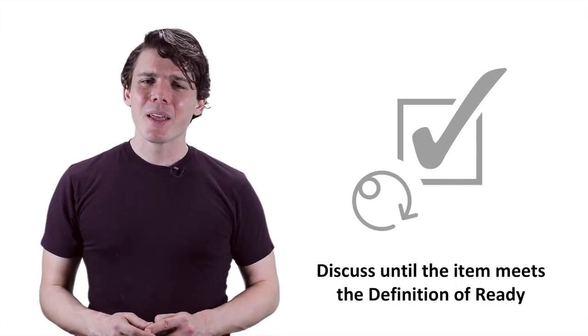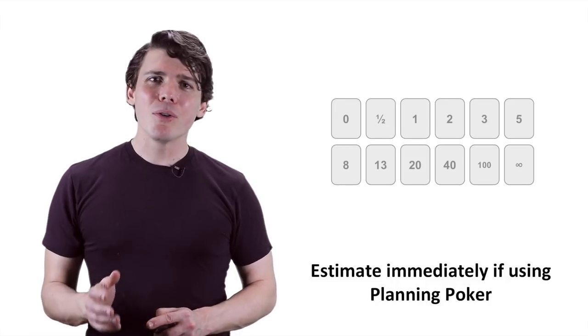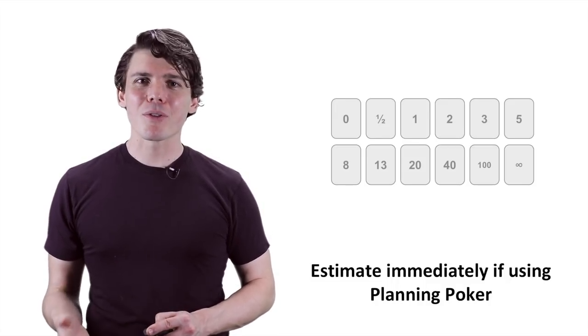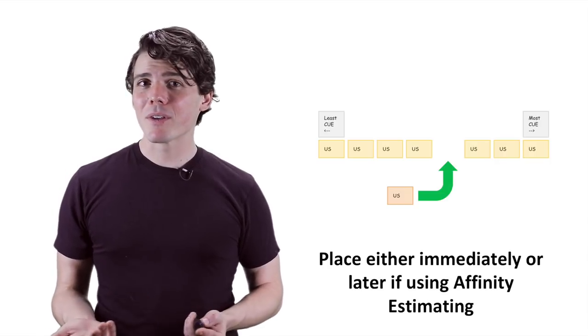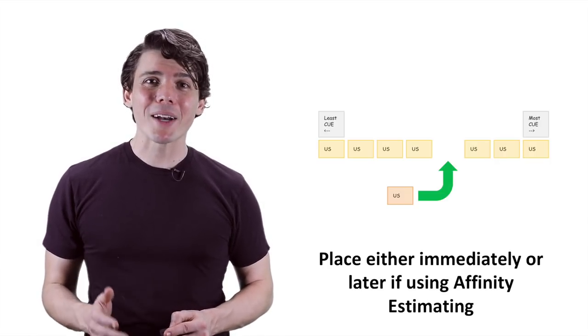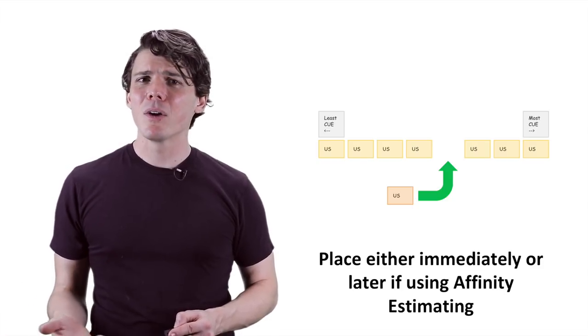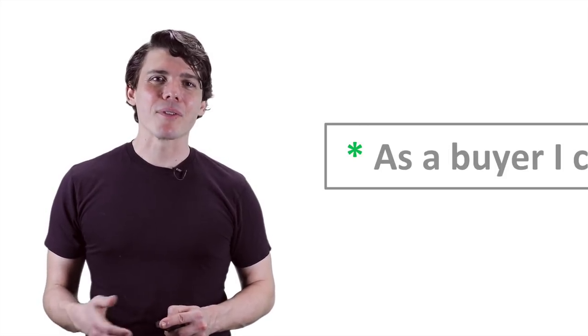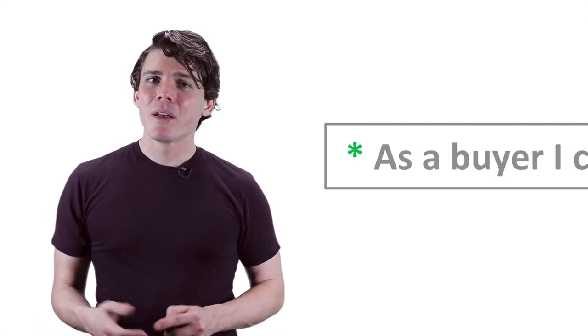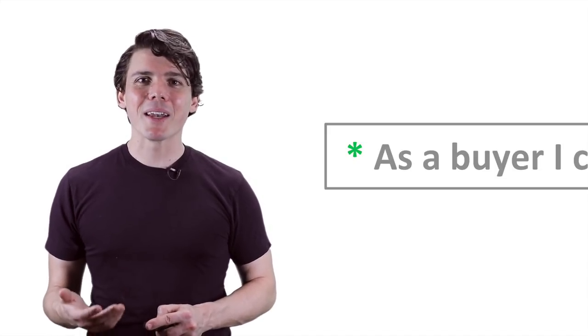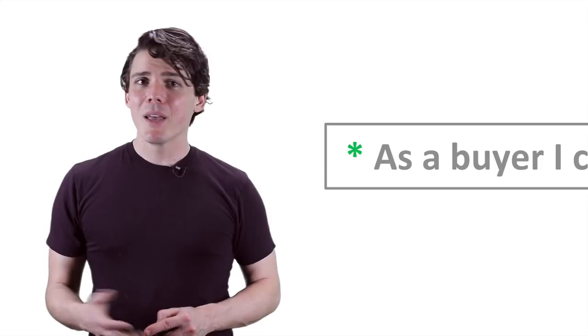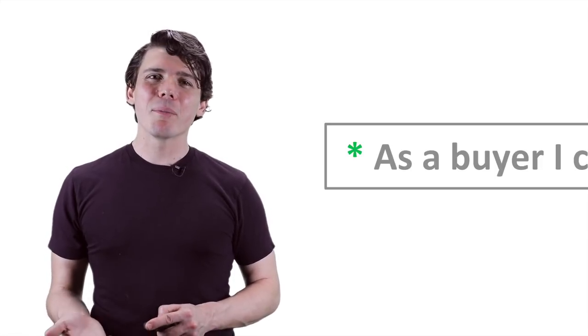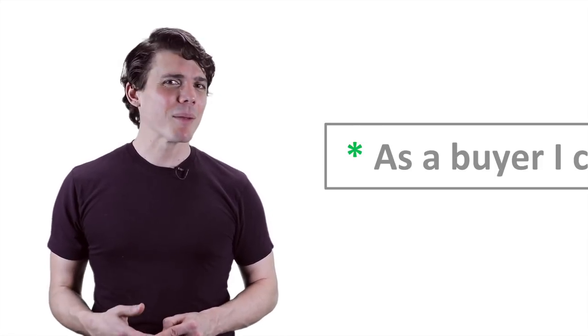Then estimate. If you're using planning poker to estimate items, do so immediately following the discussion so that it's still fresh in your mind. If you're using affinity estimating, you can place the item in its correct relative location immediately after discussing it, or wait until you've discussed everything to sort them. Once the user story is ready and estimated, mark it as ready. I like to prefix the item's title with an asterisk to indicate that it's ready. This works great when you've got several pro-forma sprints lined up following your release planning session. If you don't do release planning, you can simply create a pseudo-sprint called ready and place items in that sprint.